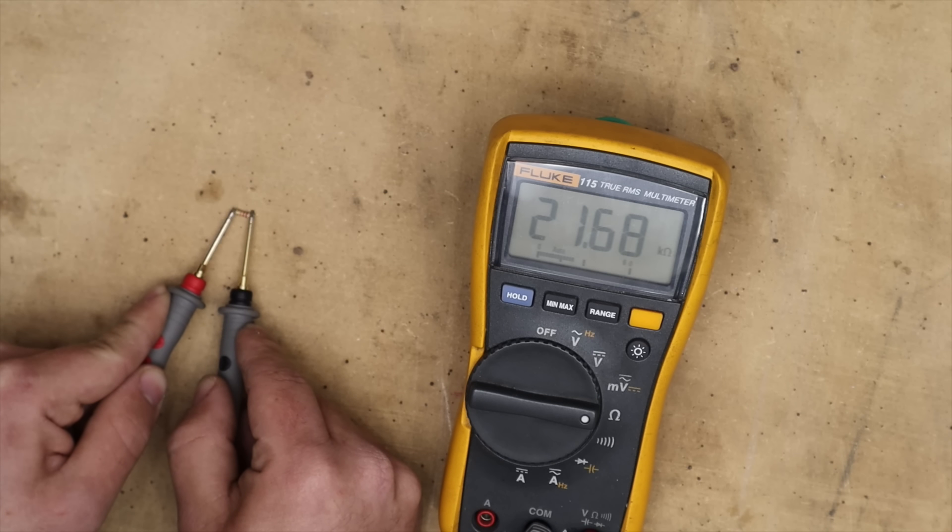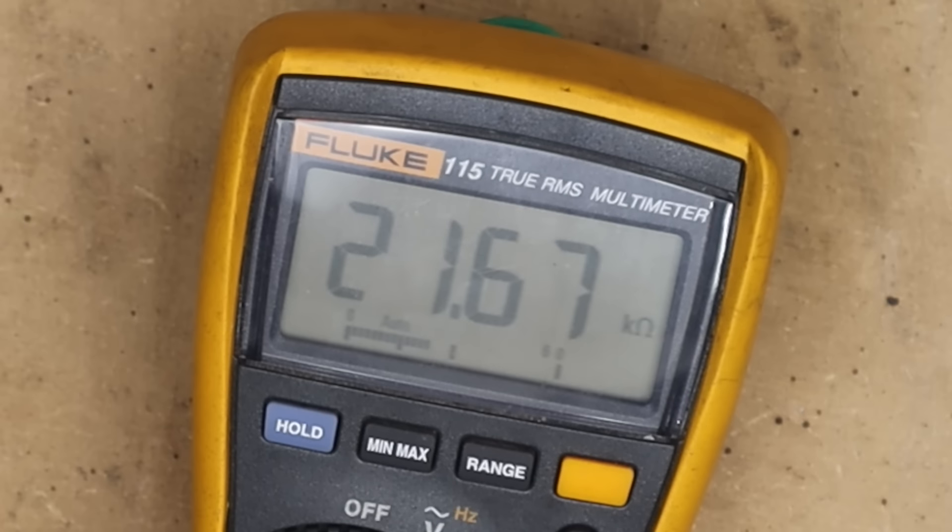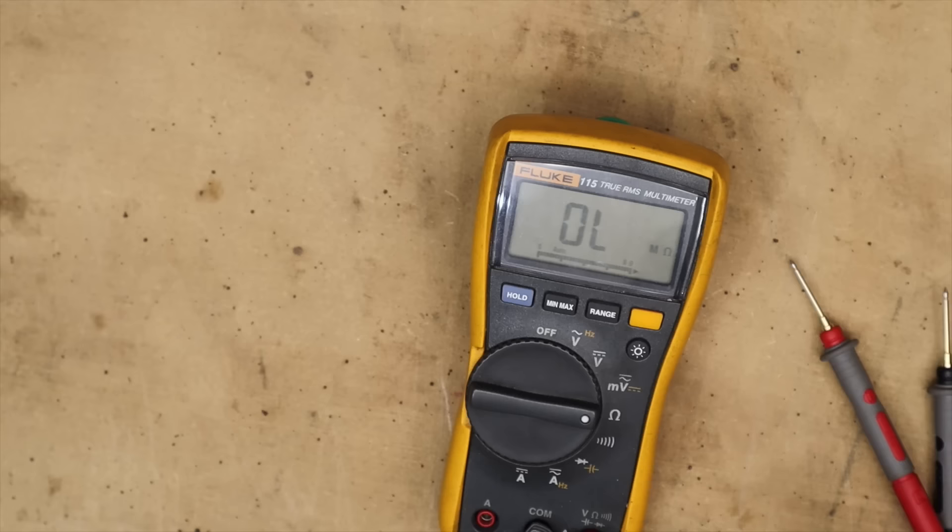This resistor for example is 21,600 ohms. We'll talk about letter values later on in the video but this is 21.6 K, K meaning kilo, so this is 21,600 ohms.